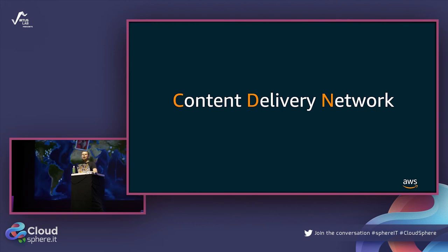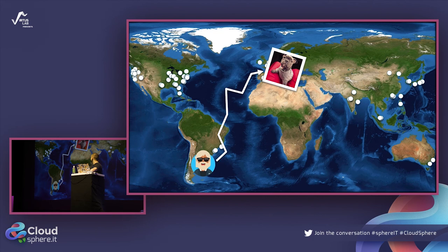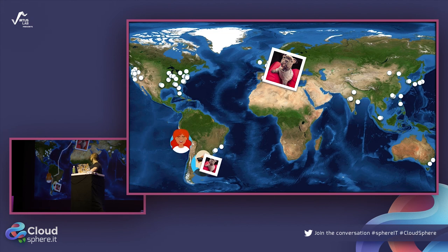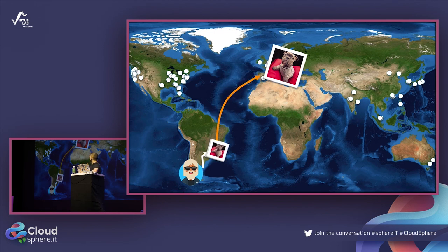CDN is a way to accelerate usually static content, though not only. If I have one application in Sydney and a user in Europe wants a picture, they send a request, the latency problem occurs, and the picture is returned. If another user also wants that picture, the same slow trip happens. CDN solves this: the user sends a request to the closest Point of Presence. If that POP doesn't have the content cached, it fetches it from the origin through the private backbone, returns it to the user, and caches a copy locally.